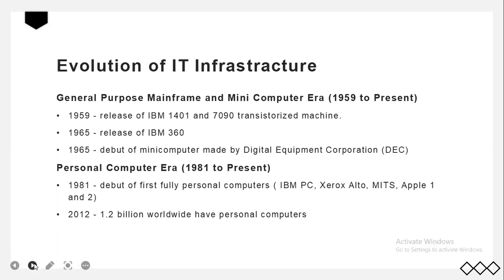The first is the general purpose mainframe and minicomputer era, starting in 1959 when IBM released the IBM 1401 and 7090 transistorized machines, marking the mainstream commercial use of mainframe computers. The IBM 360 was the first commercial computer to feature a potent operating system capable of time-sharing, multi-tasking, and virtual memory. Since then, IBM dominated mainframe computing, with many online remote terminals connected to the centralized mainframe utilizing proprietary data lines and communication protocols.